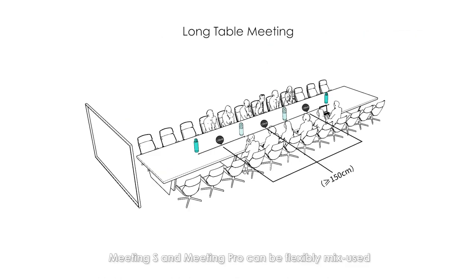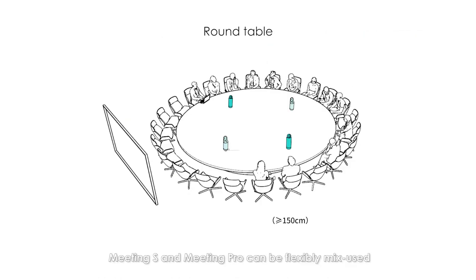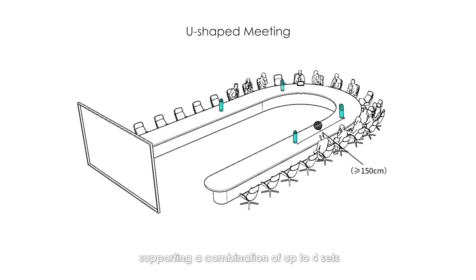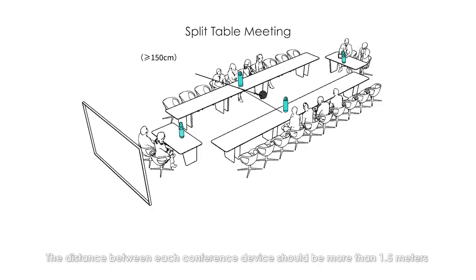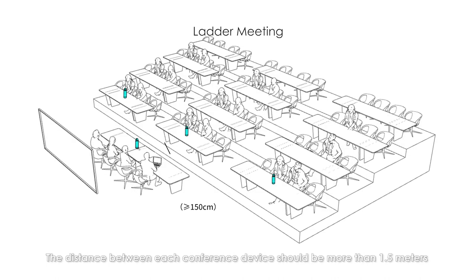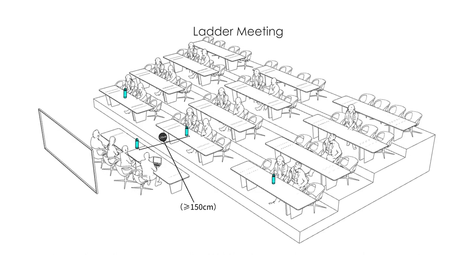Note: Meeting S and Meeting Pro can be flexibly mix-used, supporting a combination of up to four sets. The distance between each conference device should be more than 1.5 meters.